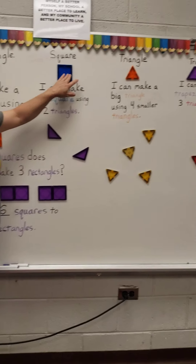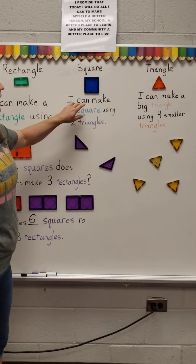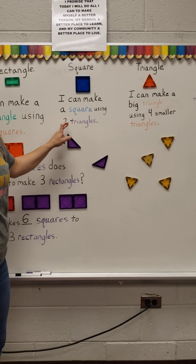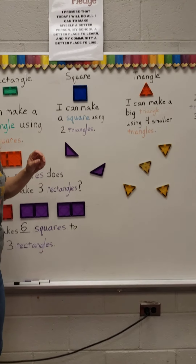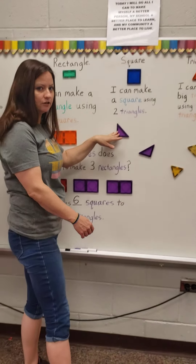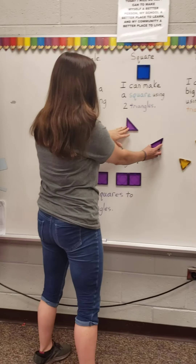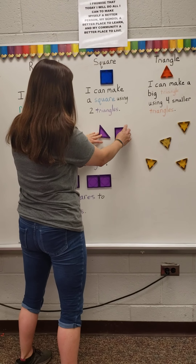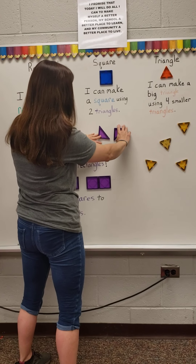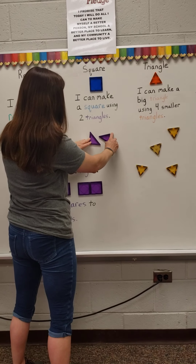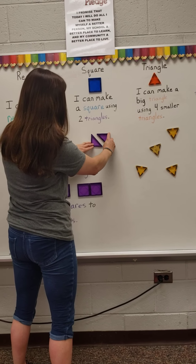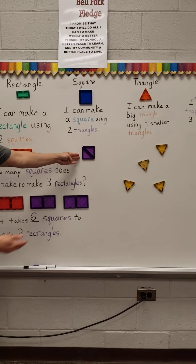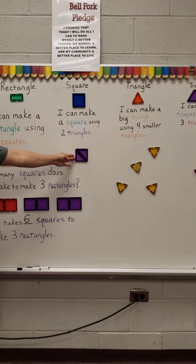For our square, I can make a square using two triangles. So I've got my two triangles here. How can I compose this shape? Maybe if I put it together like — I did it! One square.